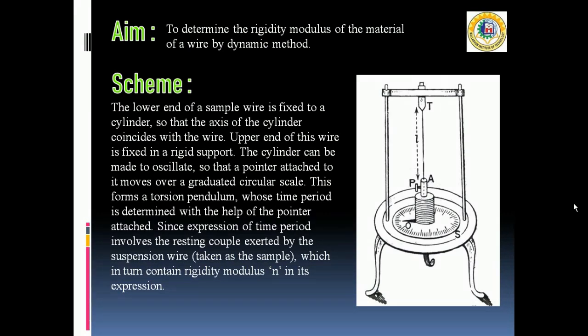The cylinder can be made to oscillate so that a pointer attached to it moves over a graduated circular scale. This forms a torsional pendulum whose time period can be determined with the help of a stopwatch. Since the total experiment is done by moving the torsional pendulum, this experiment is known to be dynamic in nature.